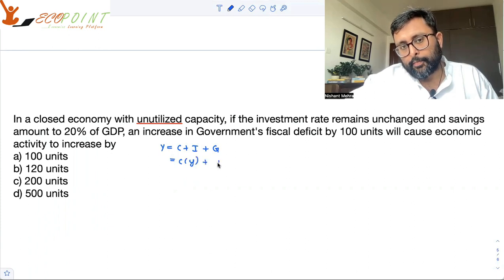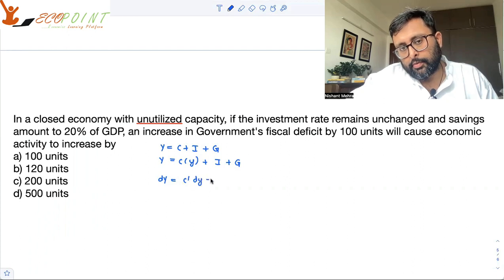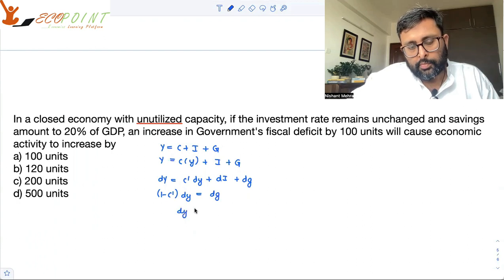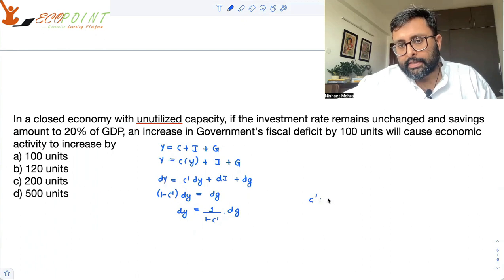Where c is a function of y, I can differentiate both sides. So it is 1 minus c dash dy equals to dg. So dy is equal to 1 upon 1 minus c dash dg. c dash is MPC.